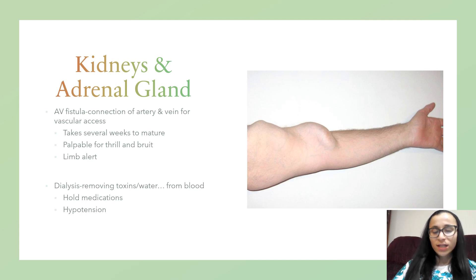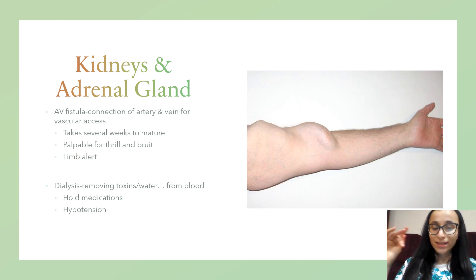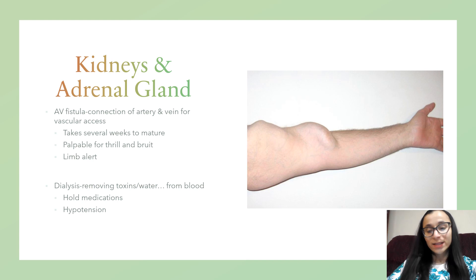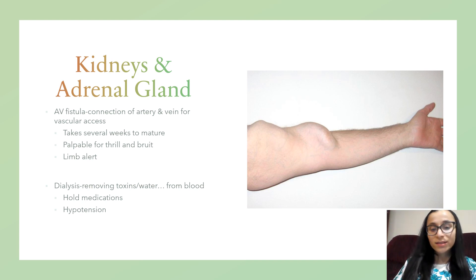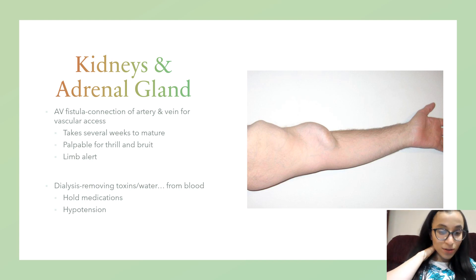An AV fistula is a connection of an artery and a vein used for vascular access during dialysis. It takes several weeks to mature — assess for a thrill or bruit, and the limb is on work restrictions: no blood draws on that side, no IVs, and a bracelet to alert everyone. Dialysis removes toxins and water, performing the function of the kidney. Before dialysis, hold medications because they'll just be removed. Watch for hypotension due to high output.